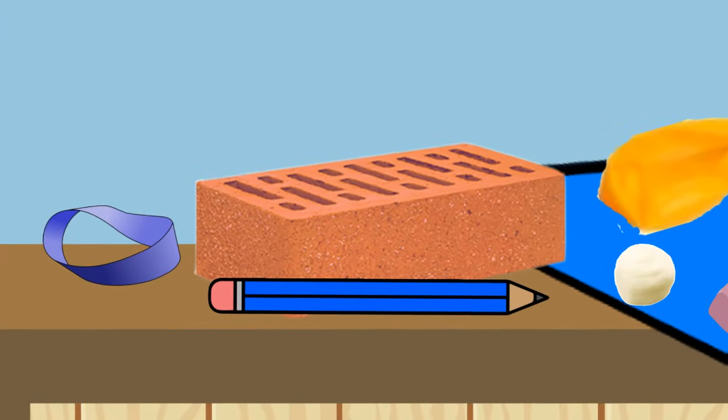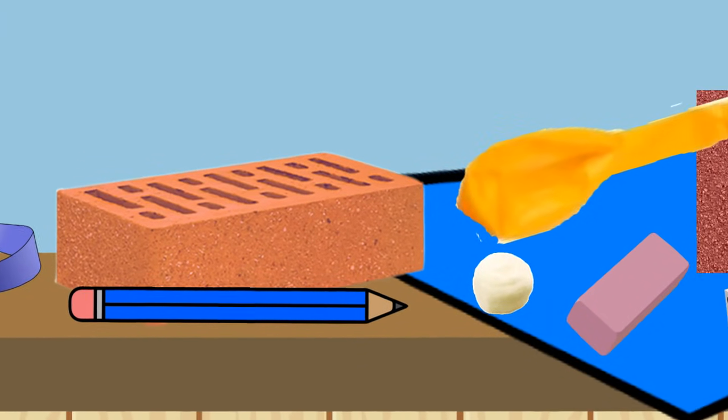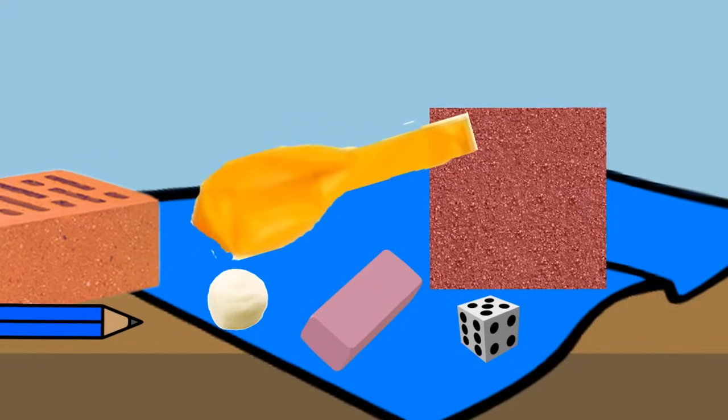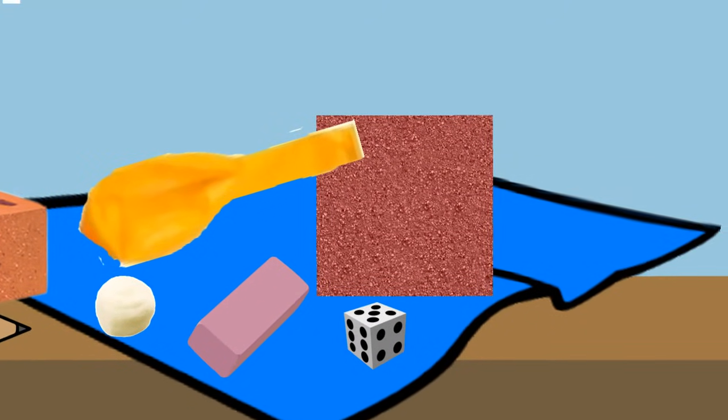Here we have a rubber band, a brick, a pencil, a cotton ball, a hand towel, a rubber balloon, a piece of sandpaper, an eraser, and a single die.